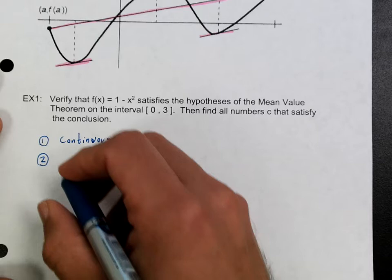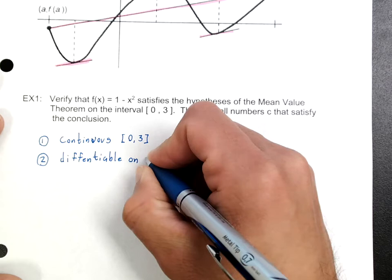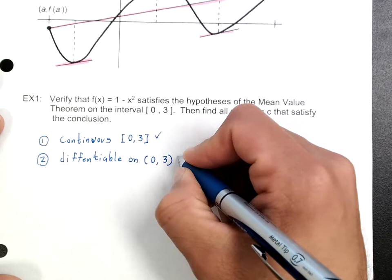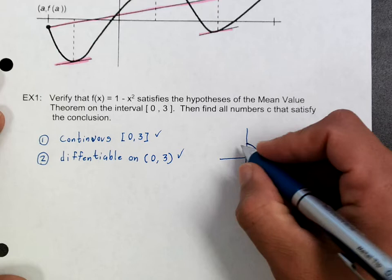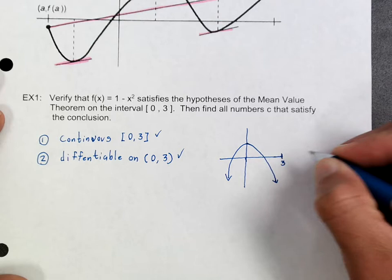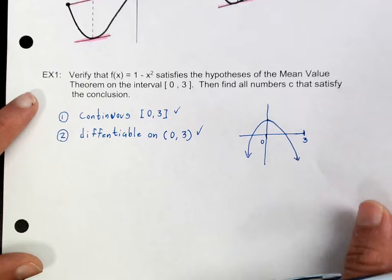The second part is asking ourselves: is this going to be differentiable? You definitely have to check to make sure those things are true, because if they are not true then you're basically finished. So it's going to be differentiable between 0 and 3. We're only looking between 0 and 3, so both conditions — continuous and differentiable — are satisfied.